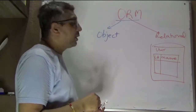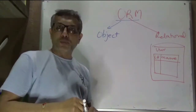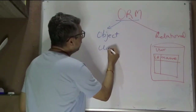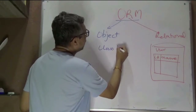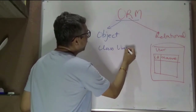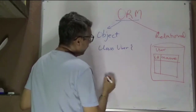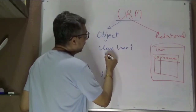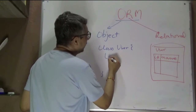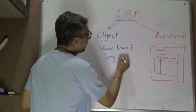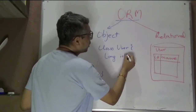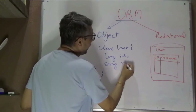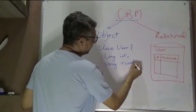How can that be represented on the object side of the world? On the object side, we can say we have a class 'User' with a representation of ID as a long and name as a String.